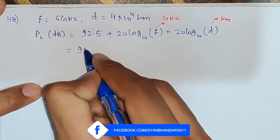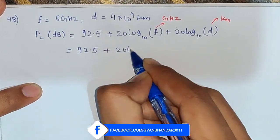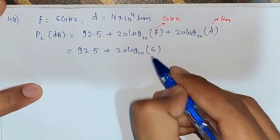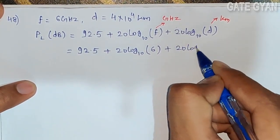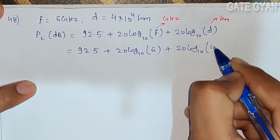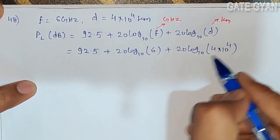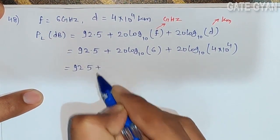It is 92.5 + 20log₁₀(f). F is given as 6 gigahertz, so we will put only 6. Plus 20log₁₀(4×10⁴) in kilometers. We need to put it in kilometers only, so simplify and solve.